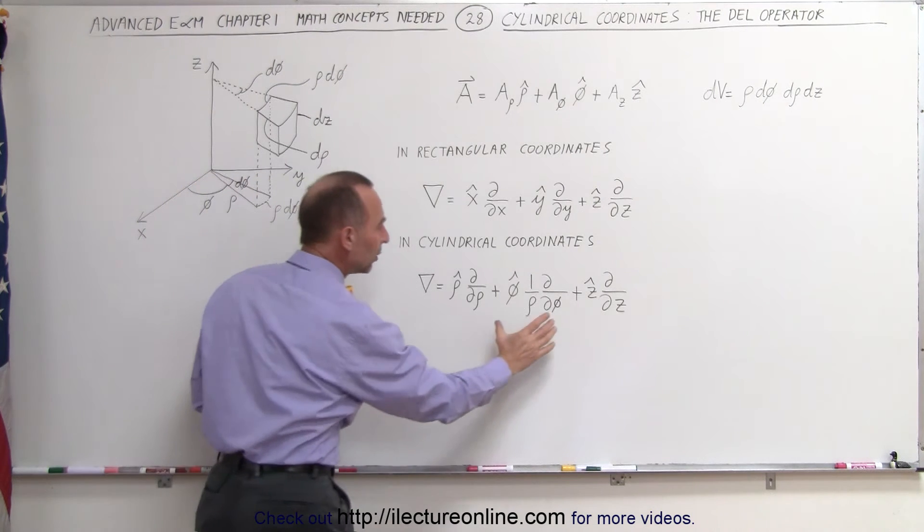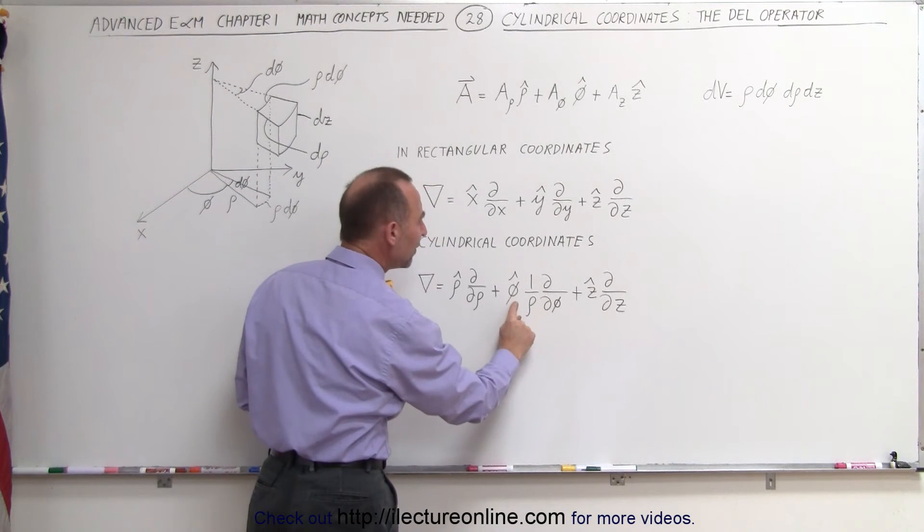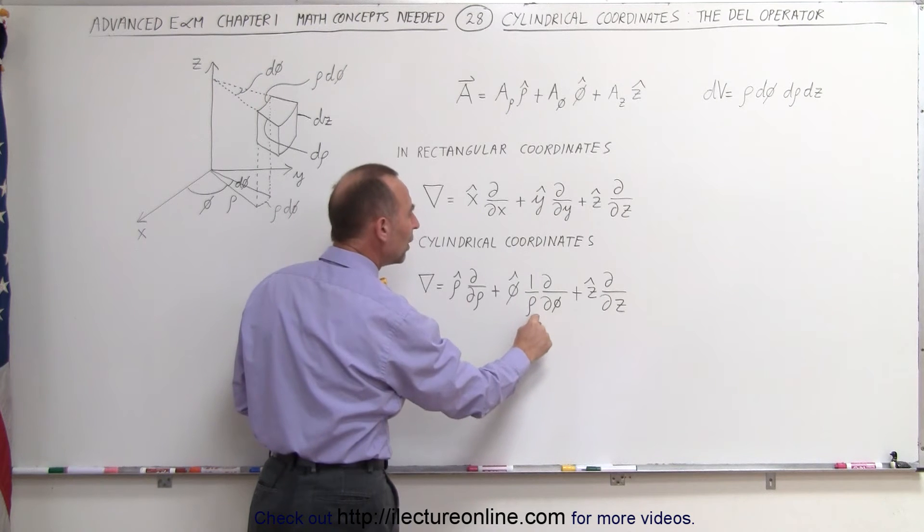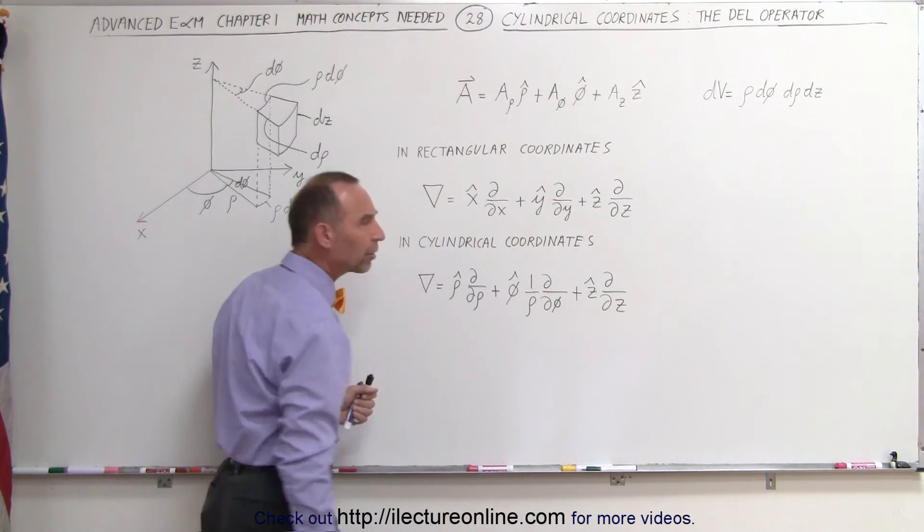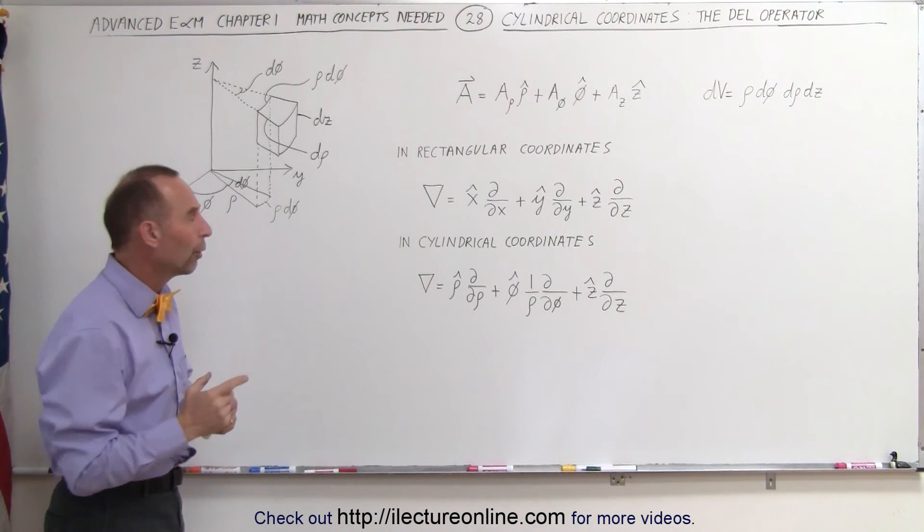But now notice the middle term. Here we have the phi unit vector. But here we have a 1 over rho times the change of the function or the change of the vector with respect to phi. What is the 1 over rho for?